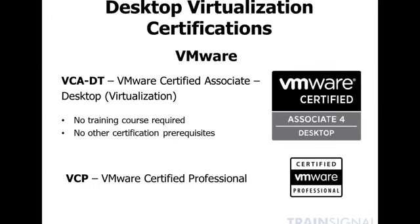Above the VCA, VMware has the granddaddy of virtualization certifications: the VCP, the VMware Certified Professional. For the VCP, VMware does require that you take one of their education courses before you can take the exam. But once you have a VCP, you could then go for the new VCP Desktop, which is a desktop virtualization certification at a more advanced level than the VCA. So VMware has at least two different tiers of desktop virtualization certifications for proving your knowledge about VMware View.